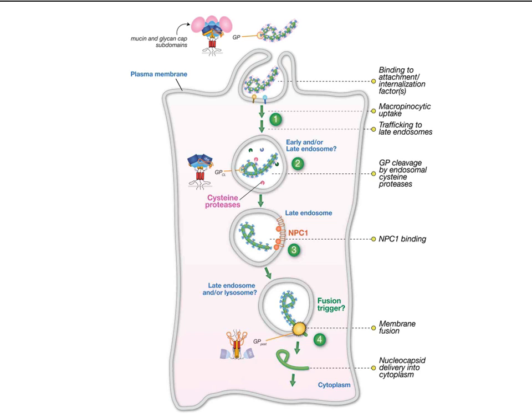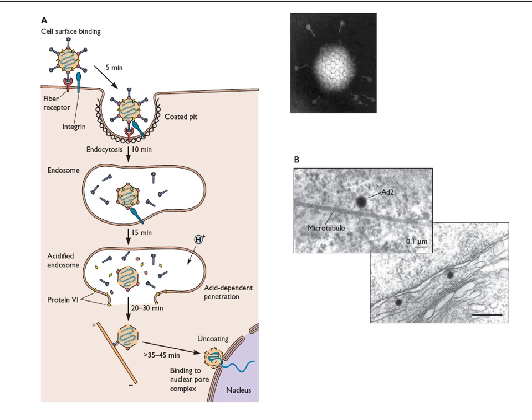Once cleavage occurs, the virus binds to an endosomal protein called NPC1 — Niemann-Pick protein 1. People with Niemann-Pick disease have a defect in this protein and have problems transporting cholesterol, leading to neurological problems. Niemann-Pick fibroblasts are deficient in this receptor and cannot be infected by Ebola virus. So the virus binds to NPC1 in the endosome — this is the first time we have two sets of binding: first at the plasma membrane, then a second interaction in the endosome. That binding is thought to trigger fusion so that the viral nucleic acid can get out. This was discovered only in the past few years, and having fibroblasts from Niemann-Pick patients — which lack the protein and are resistant to infection — was key to finding it.